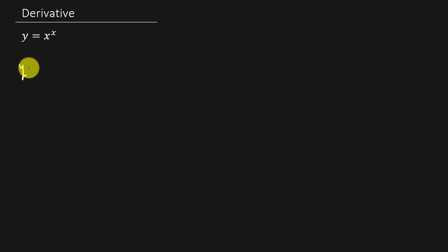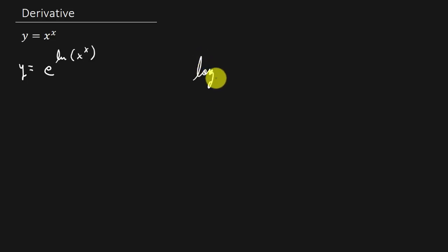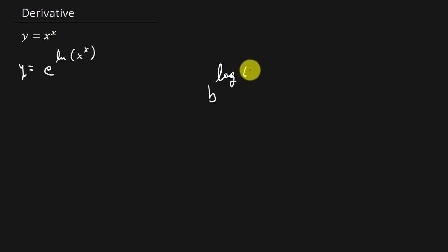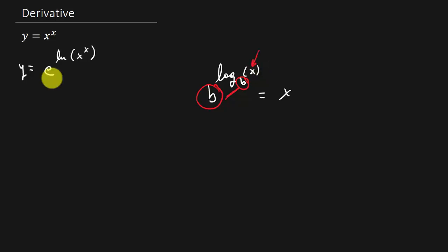What I'm going to do is rewrite y as e raised to the natural log of x raised to the x power. That's the same thing, because we have a property that says b raised to the log base b of x is equal to x. So if the base of the exponent and the base of the log are the same, your answer is what you're taking the log of.